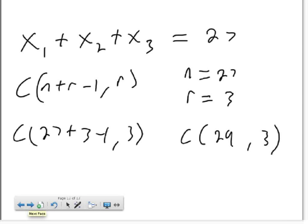So the number of ways that you can add three numbers, x1, x2, and x3, to equal 27, there are 29 choose three ways to do that.